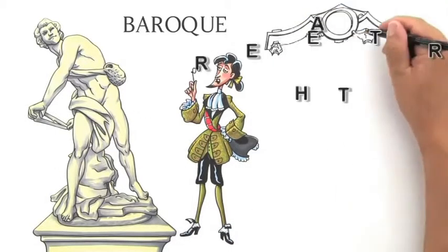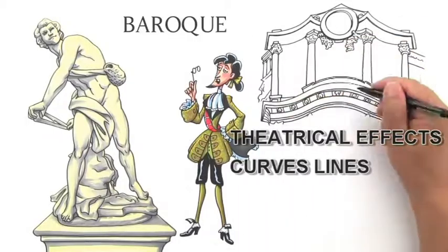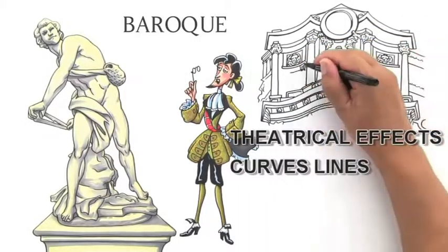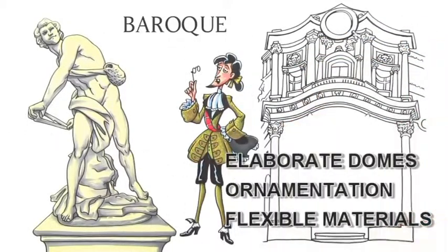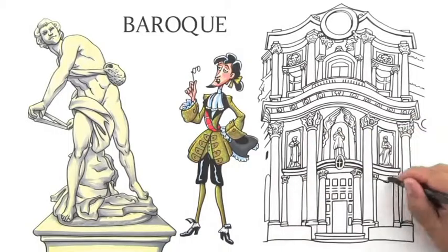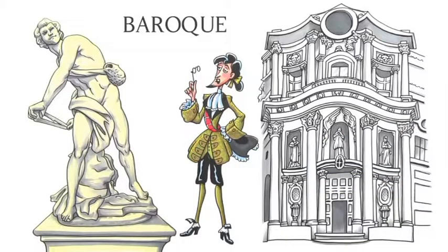Baroque architecture also employed theatrical effects, replacing the straight lines of the Renaissance with flowing curves, elaborate domes, and ornamentation. Like the Chapel of San Carlino, whose walls were designed to weave in and out as if they were formed of some flexible material instead of rigid stone.